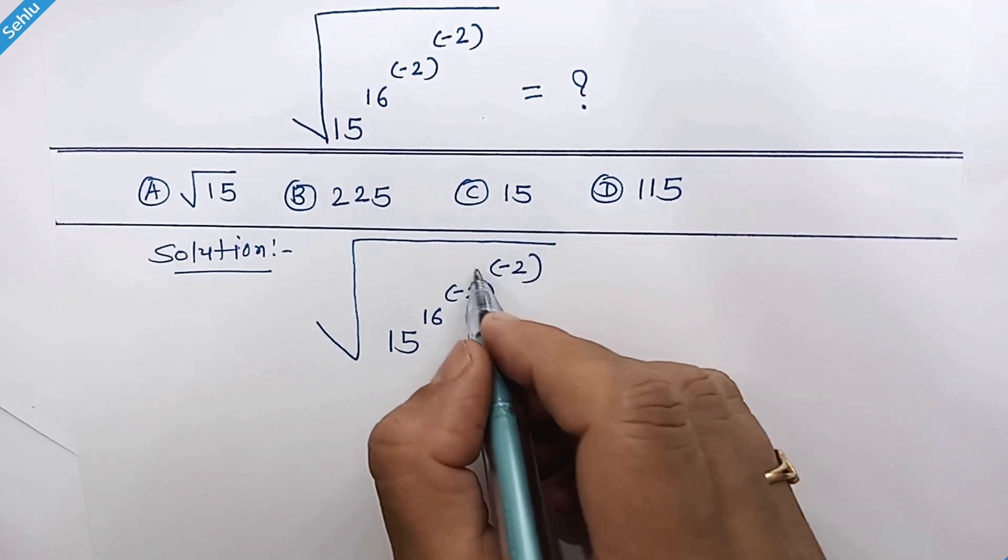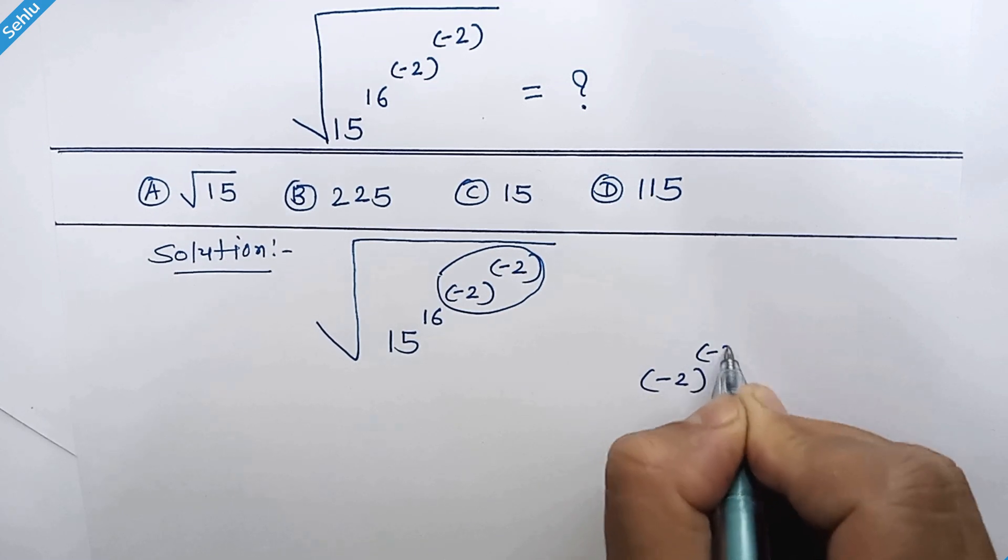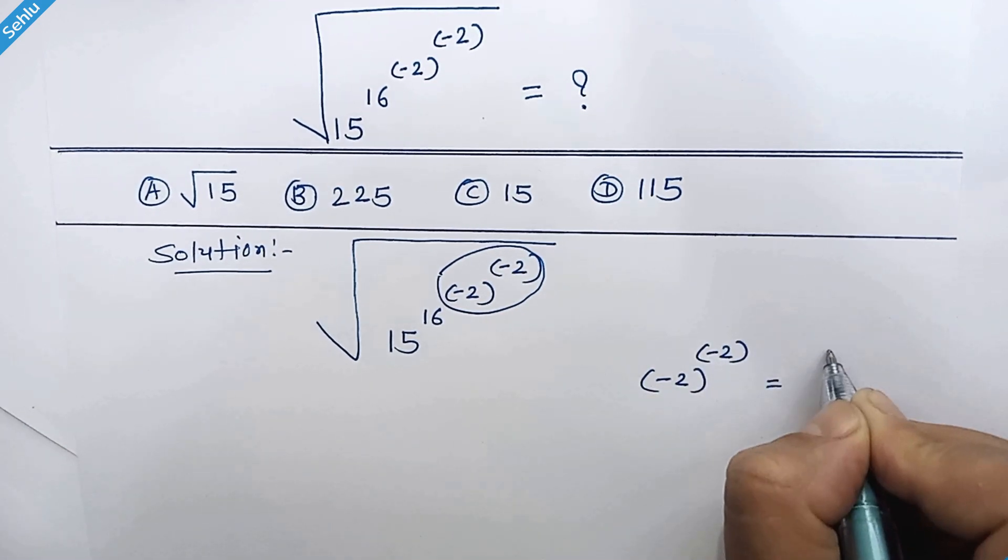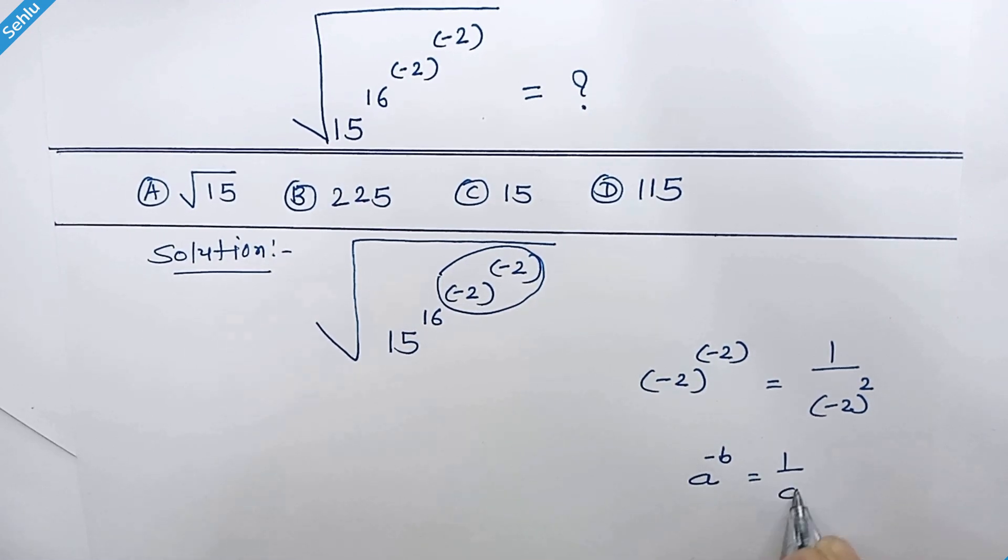First, we need to operate from here. Negative 2 to the power negative 2 can be written as 1 over negative 2 square. We can write this because when we have a to the power negative b, then it can be 1 over a to the power b.